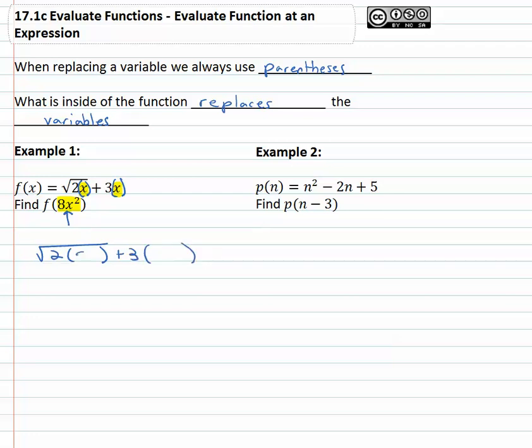What stuff is going in there? 8x squared is going in for both of them because whatever is inside the function goes inside the variables, replaces the variables if you will.